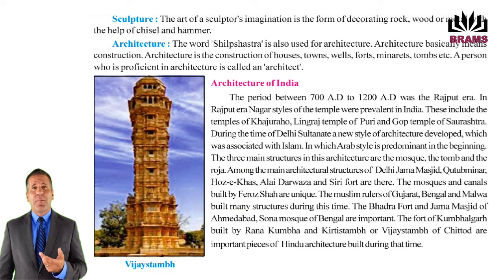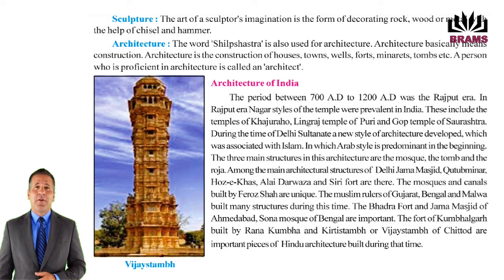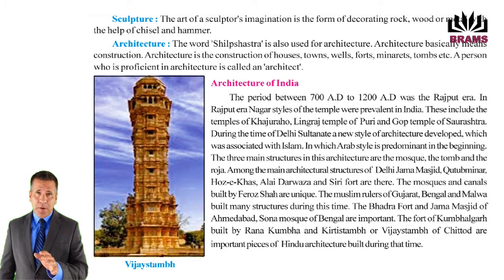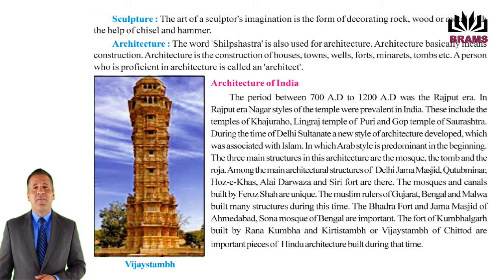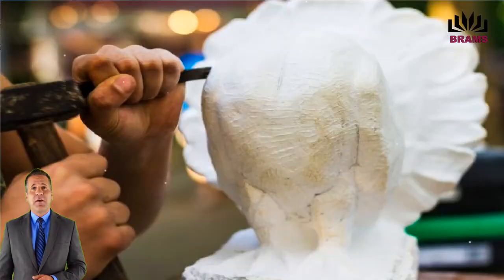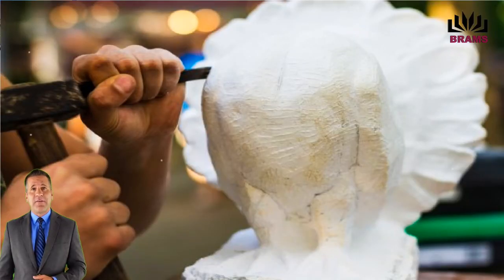Sculpture: The art of a sculptor's imagination is the form of decorating rock, wood or metal with the help of chisel and hammer. Murtikala: Murtikar ki kalpana ki kalachheni aur hathode ki madad se chattan, lakadi ya dhatu ko sajane ka roop hai.